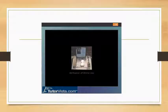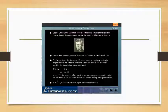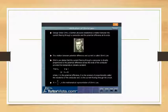Verification of Ohm's law. George Simon Ohm, a German physicist, established a relation between the current flowing through a conductor and the potential difference at its ends. This relation between potential difference and current is called Ohm's law.